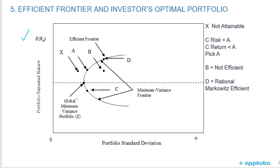On the y-axis, we've got the expected return of the portfolio. On the x-axis, we have the portfolio standard deviation. We can see the graph of the efficient frontier. There are a few notable spots on the graph. First is point X — it's not attainable because at that level of risk, you can't get that level of return.